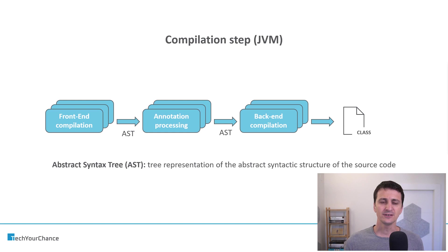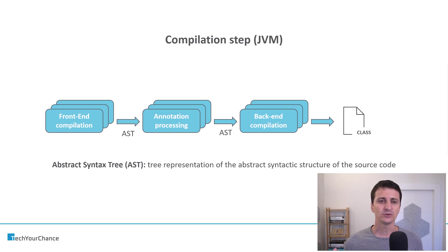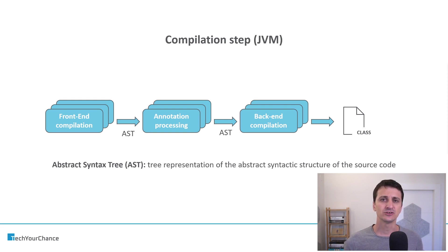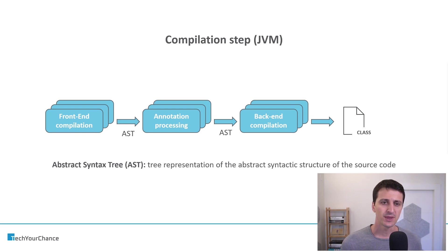The data structure used to pass data from the front-end to the back-end steps is called AST, Abstract Syntax Tree, which is basically a tree representation of the structure of your source code.